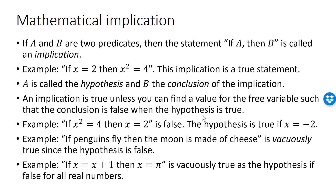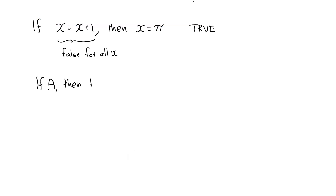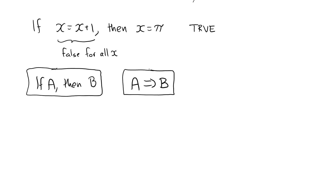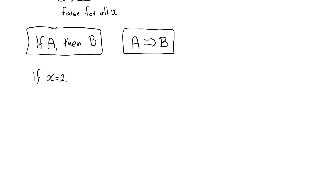We have a special symbol for implications. If a then b can also be written as a followed by a double arrow pointing to b. For example, if x is equal to 2 then x squared is equal to 4 can be written using the arrow. When we use the arrow, it's common to pronounce it as 'x is equal to 2 implies that x squared is equal to 4'.